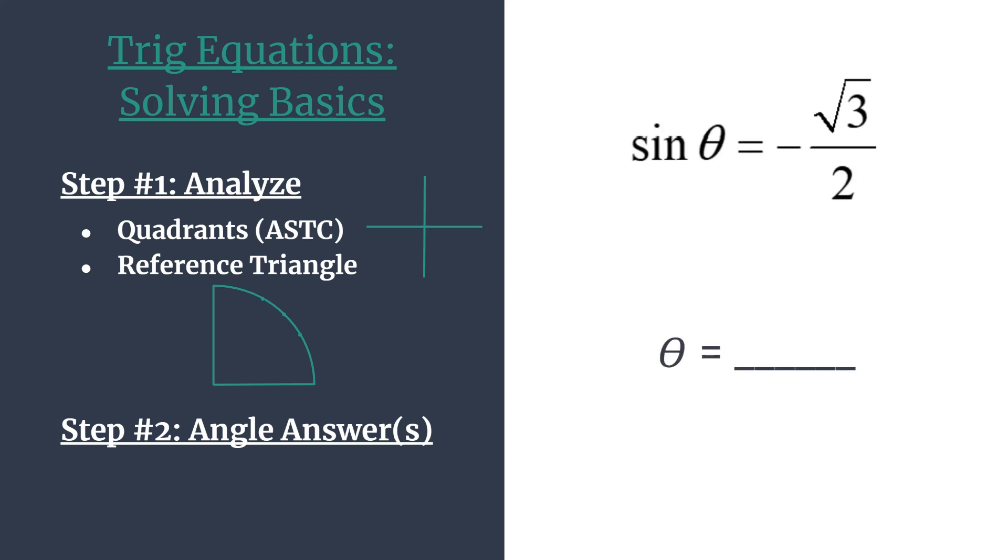Let's do this now for sine theta equals negative root 3 over 2. As we start, remember that we're thinking what angles, which angle or angles, have a sine of negative root 3 over 2. Let's go ahead and do a quick labeling to our quadrants. Think ASTC, standing for All Students Take Classes. That's just a quick way to help you remember. Work your way around from quadrant 1 and label with these letters. These letters actually tell you which trig functions are positive in their corresponding quadrant.